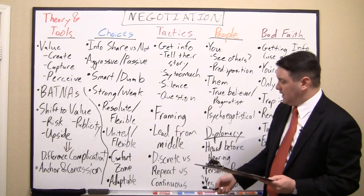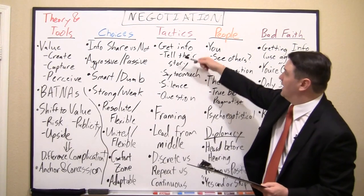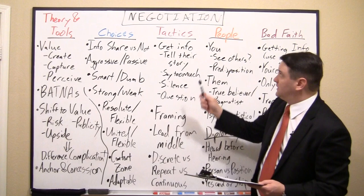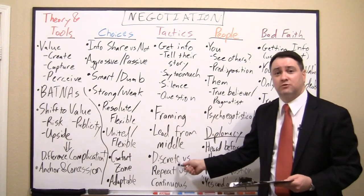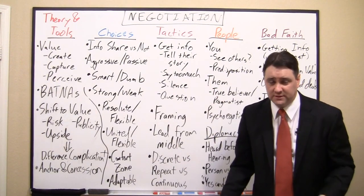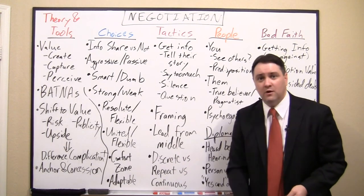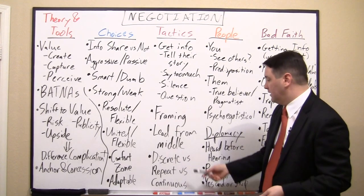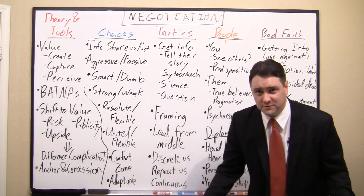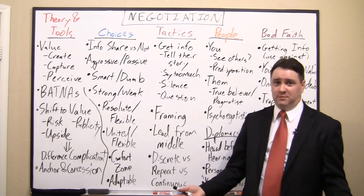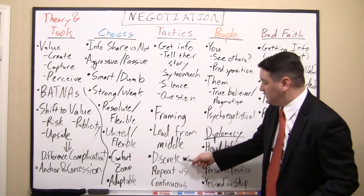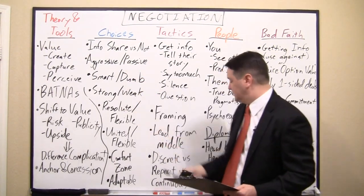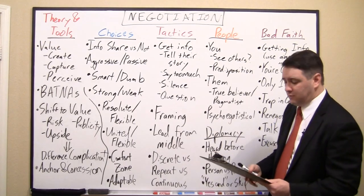An important factor in deciding which tactics to use is whether the negotiation is discrete — a one-time deal where you'll never see these people again — repeat, meaning you work in the same industry and will likely encounter them again, or continuous, such as a joint venture where you'll be working together daily. This significantly affects choices like whether to appear smart or dumb, aggressive or passive.